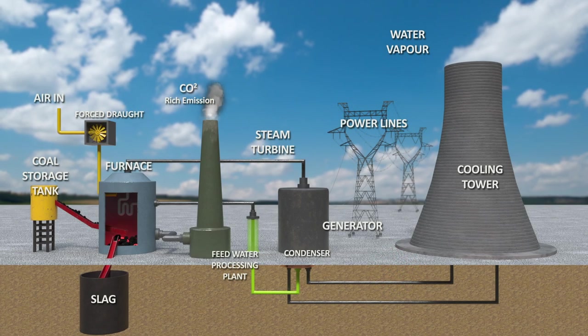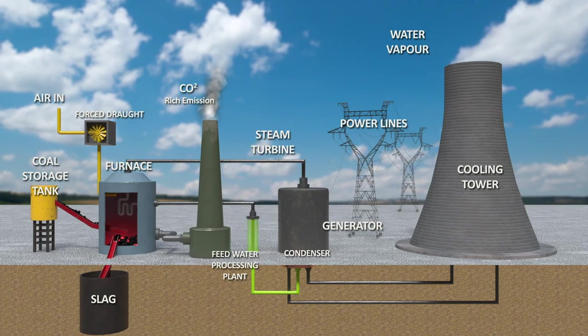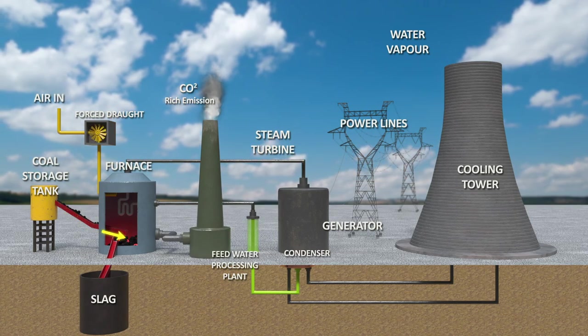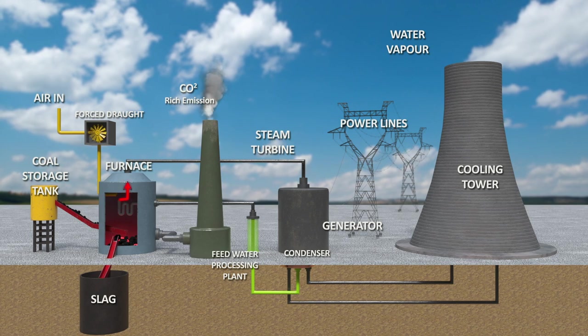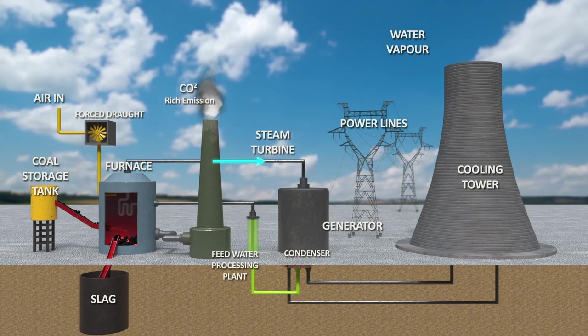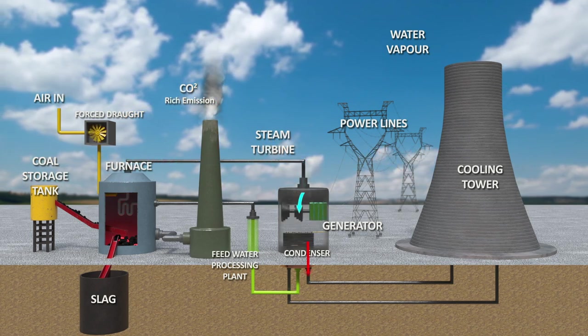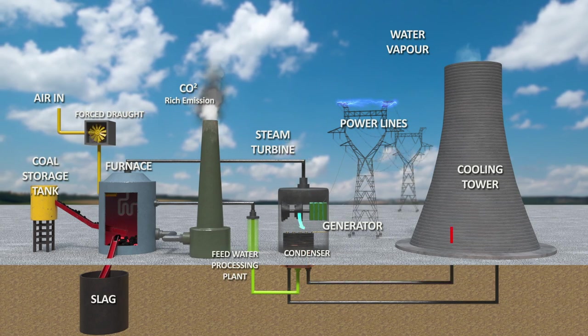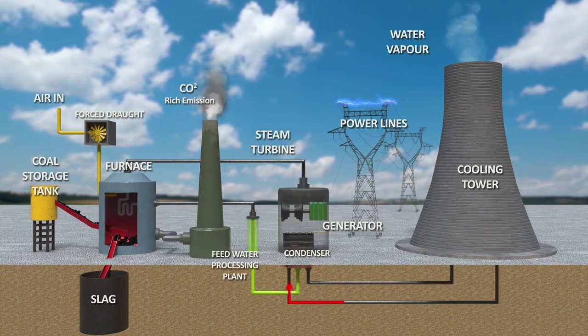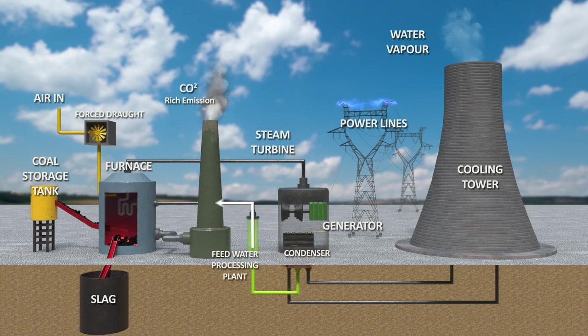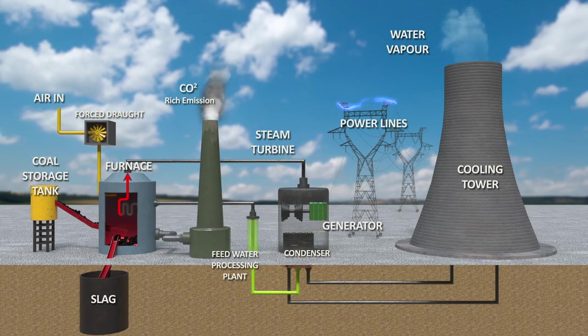A nuclear power plant works in many ways just like a coal plant. You have some fuel you burn to heat water and turn it into steam. Then you have a steam turbine that then drives a generator which produces electricity. Then the steam is condensed into water again, and then reheated, it turns into steam, and the process continues.